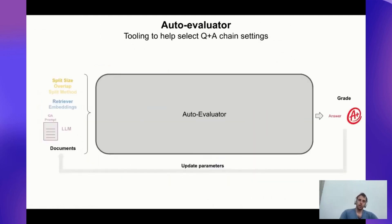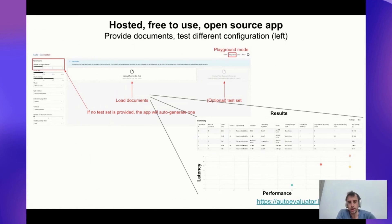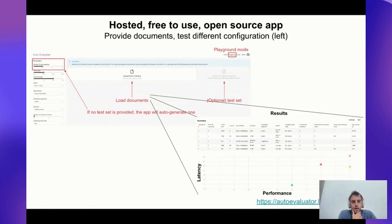We actually have an application for this called Auto Evaluator. It's a free-to-use hosted application and also open source, where you can input your documents of choice, input your settings, and it will evaluate it for you against a test set you provide or an auto-generated set of question-answer pairs you expect from your documents. It's a playground environment where you can select different settings — chunk sizes, models, retriever methods, number of docs to retrieve. You can upload your documents of interest, upload an eval set, run a bunch of experiments, and see the logs or experiment results in the UI.